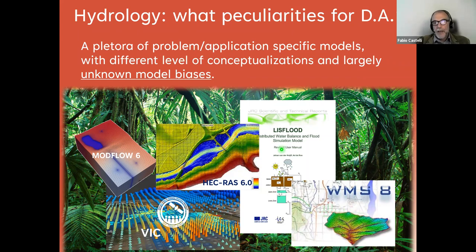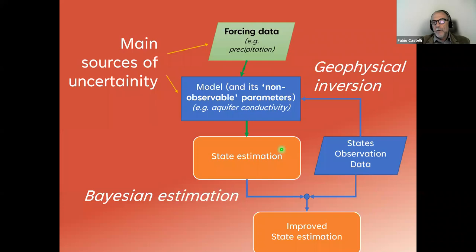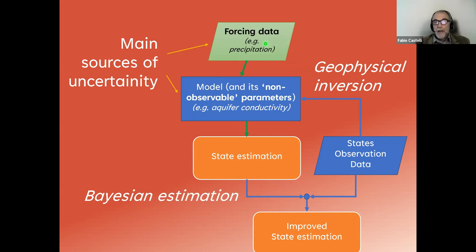Let's start with some examples. I will deal with a few examples framed in two main families of data assimilation problems: state or Bayesian estimation, and geophysical inversion. In Bayesian or state estimation, you assume that even if you have some source of uncertainty — in forcing data, in the model structure, or in the non-observable parameters — you cannot do much to reduce the error. You use state observations and data to improve directly the state estimation or prediction that the model provides.